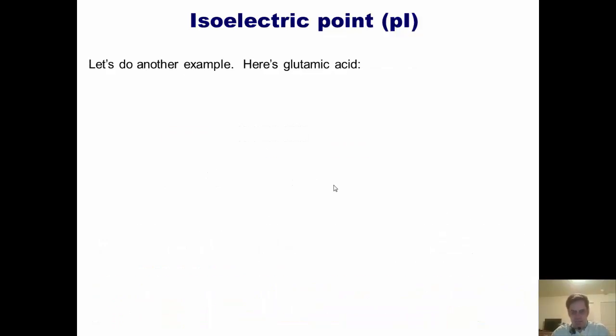Let's do another example. Here's glutamic acid. Once again, I ask the question, which two ionizable groups have the same charge as each other? Once again, I'm looking at the two OHs here and the NH3+. Those are the ionizable groups. In this case, I only have one NH3+, and I've got two OHs. So the NH3+ here, in this case, is the odd man out.